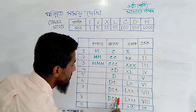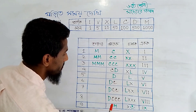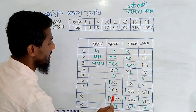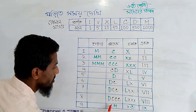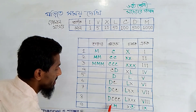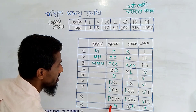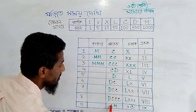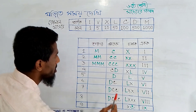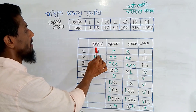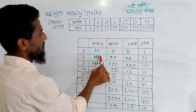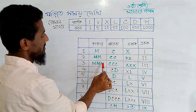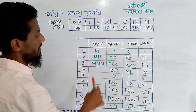I will give you 9900. M means 1000, double M 2000, triple M 3000.